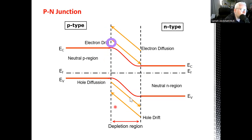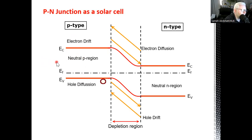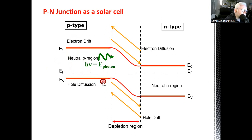So this is the formation of the built-in potential or depletion region. How does this formed P-N junction act as a solar cell? Let's assume that our optical injection is directed to this P-type region — this is the front side toward the sun. Once you have a photon here, and this photon has energy greater than or equal to the band gap of the material — for example, silicon — the electron in the valence band will jump to the conduction band by absorbing the photon. This electron will then drift in this direction.